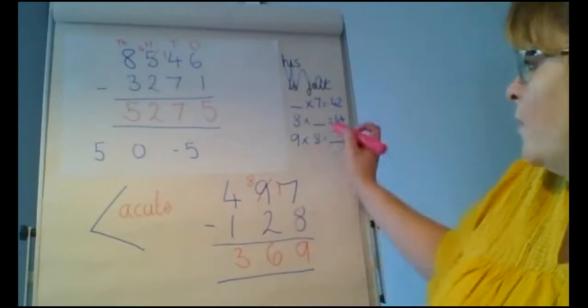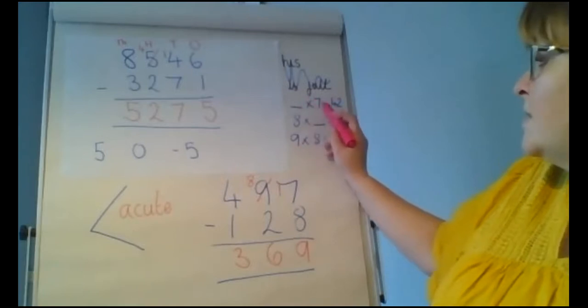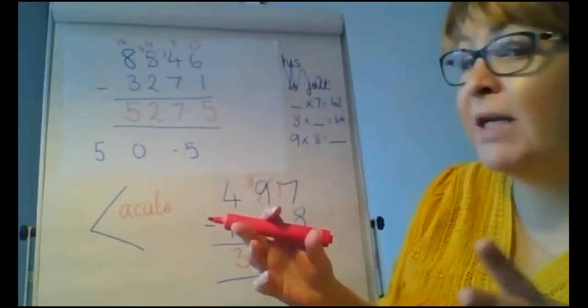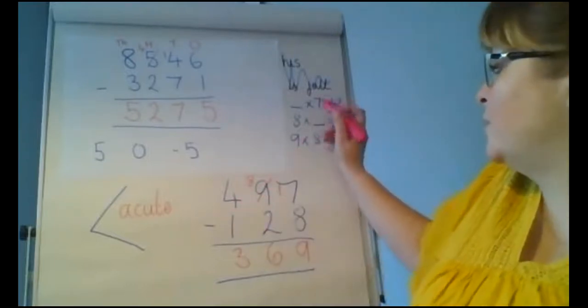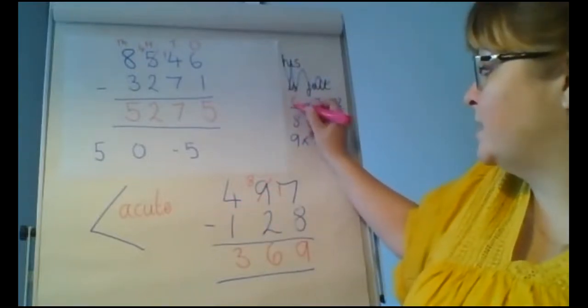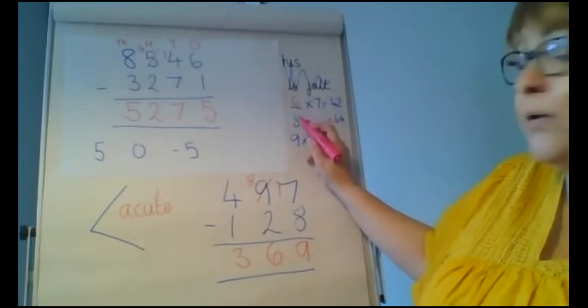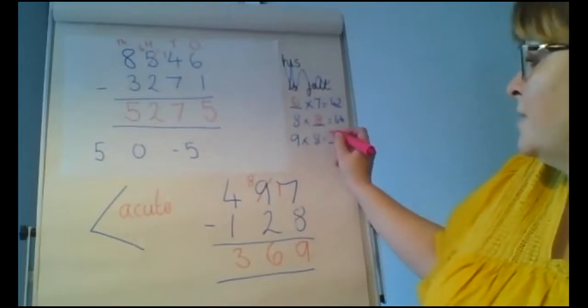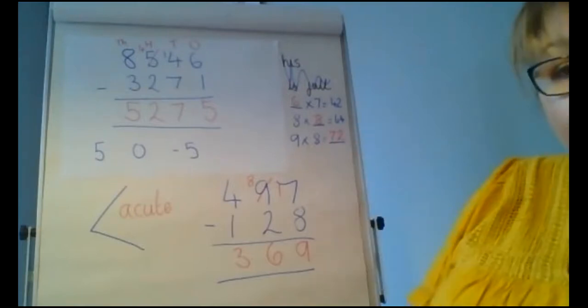Then moving on, we have some times tables. Something times 7 is 42. Use those multiplication facts. 42 divided by 7 would be 6. We know that 8 times 8 is 64. And 9 times 8 is 72.